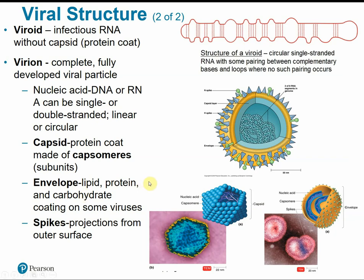An envelope is a lipid, protein, and carbohydrate coating that some viruses may have, very similar to a cell membrane — just an extra layer of protection around the protein coat. Some enveloped viruses have spikes or projections on their outer surface that aid in attachment to host cells, making them stickier. These spikes also give the influenza virus its ability to clump the red blood cells of its hosts. Non-enveloped viruses just have the naked capsid, not covered by a lipid envelope.